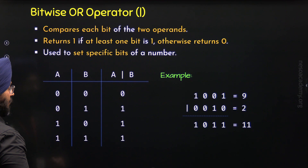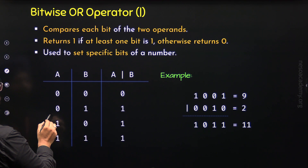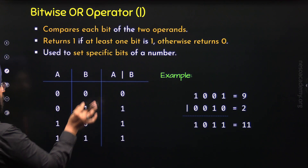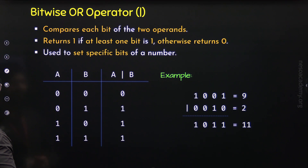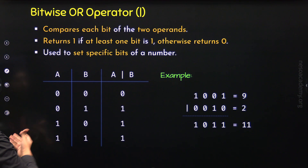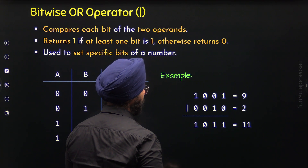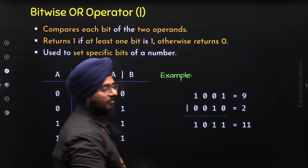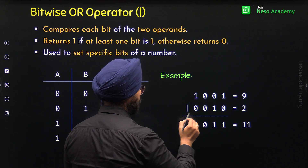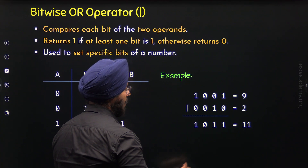When in the second operand we set a specific bit to 1, we are able to set the corresponding bit in the first operand to 1. When we set a specific bit to 0 in the second operand, we extract the corresponding bit from the first operand as it is. We set this bit to 1 because we want to set it to 1, and we set zeros for the remaining bits because we want to obtain them as they are. That is why we get the output 1011, which is 11.